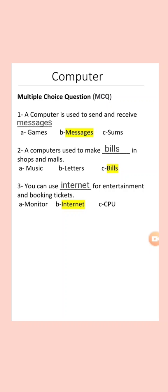Number 2: a computer is used to make dash in shops and malls. Options: A) Music, B) Letters, C) Bills. What is the right answer? Number C — Bills.